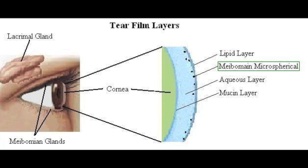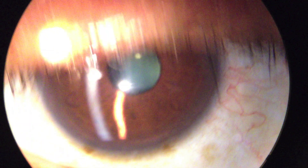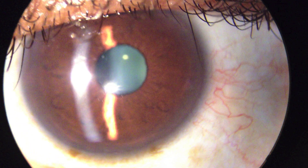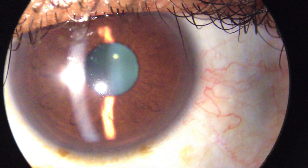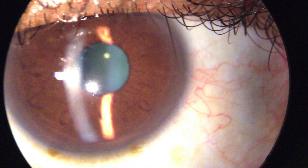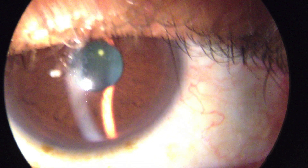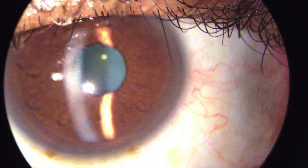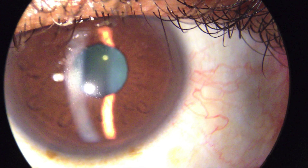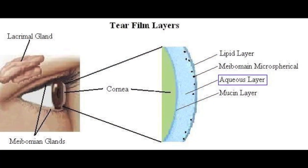A possible visible component of meibomian secretions are the meibomian microsphericals. Though not traditionally considered a tear film layer, we feel that this is an important clinical presentation. As we can see in this slow-down video of a normal eye taken with the Eye PhotoDoc clinician, there is a large quantity of meibomian microsphericals. These are readily visible during what we call the spot test. If you look at the filament reflection off the cornea, you will notice them throughout the blink. Though in the past these were considered tear film debris, clinically we have noticed a strong correlation between the lack of these microsphericals and symptoms of dry eyes.